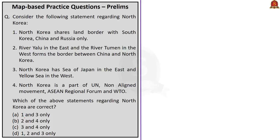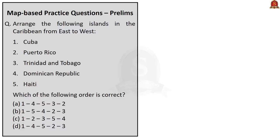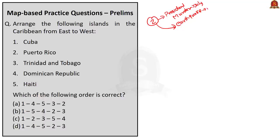Now let us move on to the next question, based on the country Haiti. Haiti was recently in news for two reasons: a political crisis caused by the assassination of Haitian president Jovenel Moïse on July 9th this year, and an earthquake in August. Gautam sir covered various aspects of Haiti regarding its geography, history, climate, flora and fauna, and environmental concerns in our discussion on 10th July 2021.